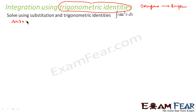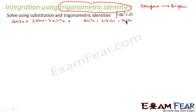I know this formula: sine 3x is nothing but 3 sine x minus 4 sine cube x. With this, I get sine cube x as nothing but 3 sine x minus sine 3x, the whole thing divided by 4. So sine cube x converts into a simpler formula involving sine x and sine 3x, which is easy to solve.